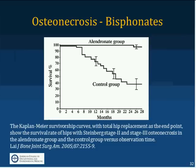A trial of bisphosphonates such as alendronate for people with osteonecrosis showed that survival — using total hip replacement as the endpoint — was improved in people with moderate to severe osteonecrosis over the duration of the trial, which was a little over two years. So bisphosphonates are probably a good thing to do.